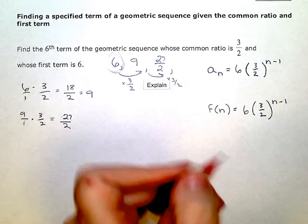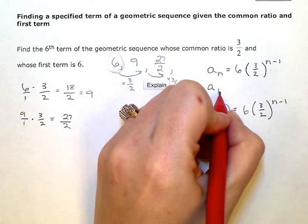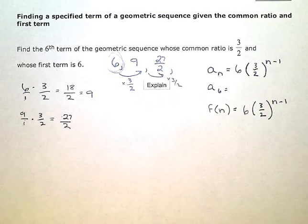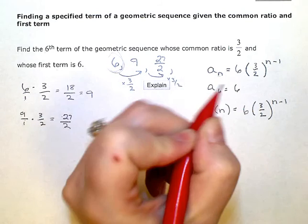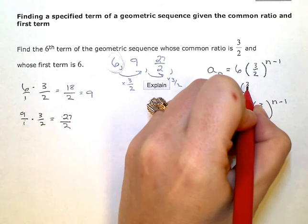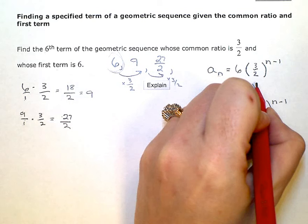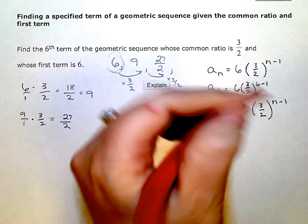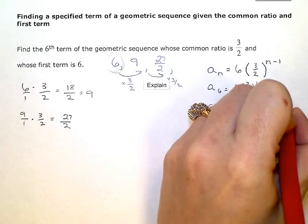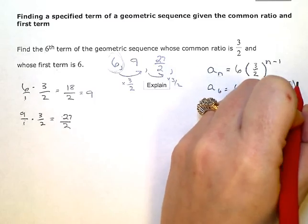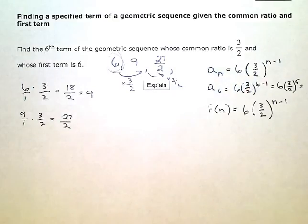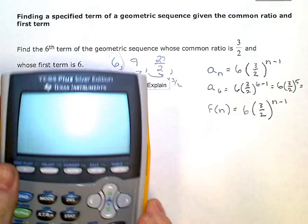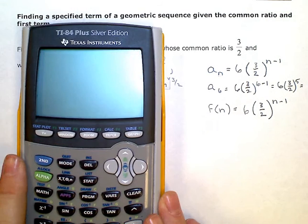So if I want the sixth term, a sub six, that means start with my first term, six, and multiply by three halves, six minus one times, or five times. So six times three halves raised to the fifth. And I'm going to go ahead and just put that into the calculator. So this formula will help me find any term down the line, not just the sixth one.